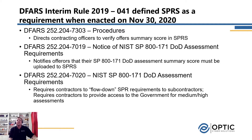The interim rule basically requires that any organization, whether it's a prime or a subcontractor bidding on DoD work, to upload a SPRS worksheet to the SPRS website to attest to their cybersecurity program. The SPRS worksheet is the next step in evolution of the DFARS, and expands on the original DFARS rule that simply required that DoD contractors attest that they have implemented the 800-171 controls.